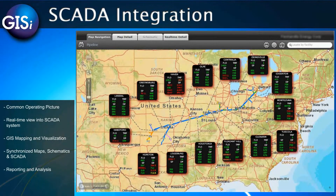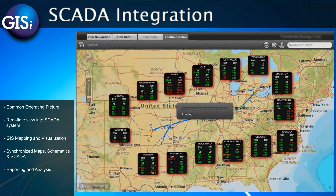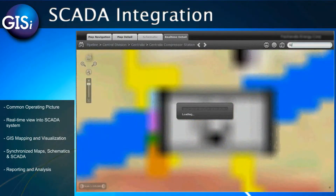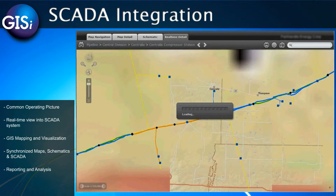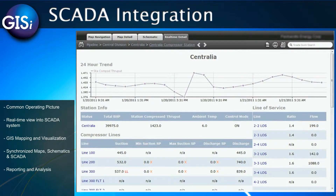This is the Enterprise Pipeline Operations System, which has been fully deployed for a large natural gas distribution company. It includes an integrated GIS, SCADA, and Schematics dashboard. By clicking on the real-time Centralia compressor station, the GIS and SCADA components are synchronized.